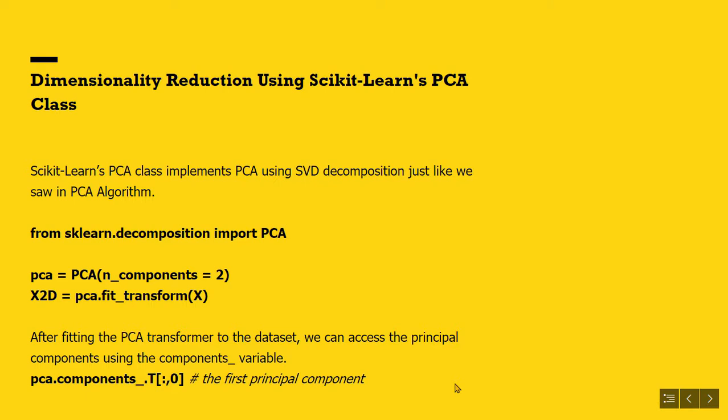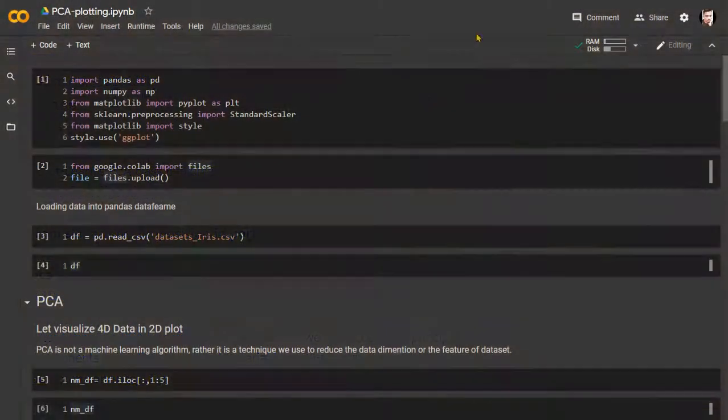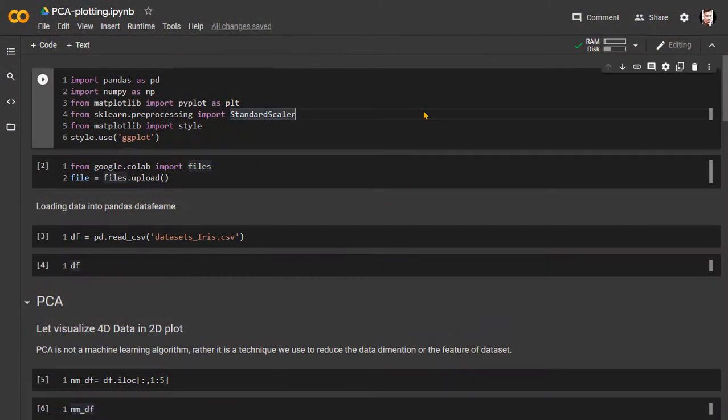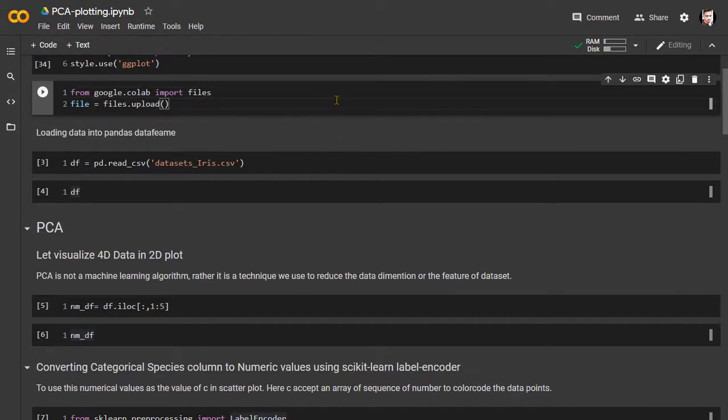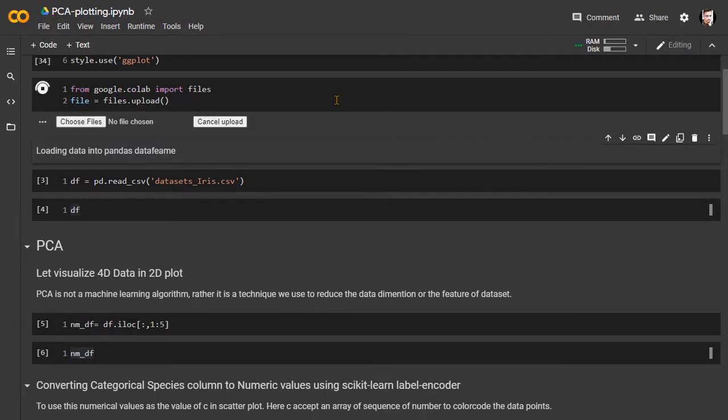So, enough talk with fundamentals, let's jump right into the code. Starting with importing initial libraries. Then we will import the dataset and load it to the pandas dataframe. Here we will be working with the iris dataset. As we know, the iris dataset consists of four features, or the dataset has four dimensions. So we will down it to two dimensions using principal components analysis so that we can plot them in a 2D graph.